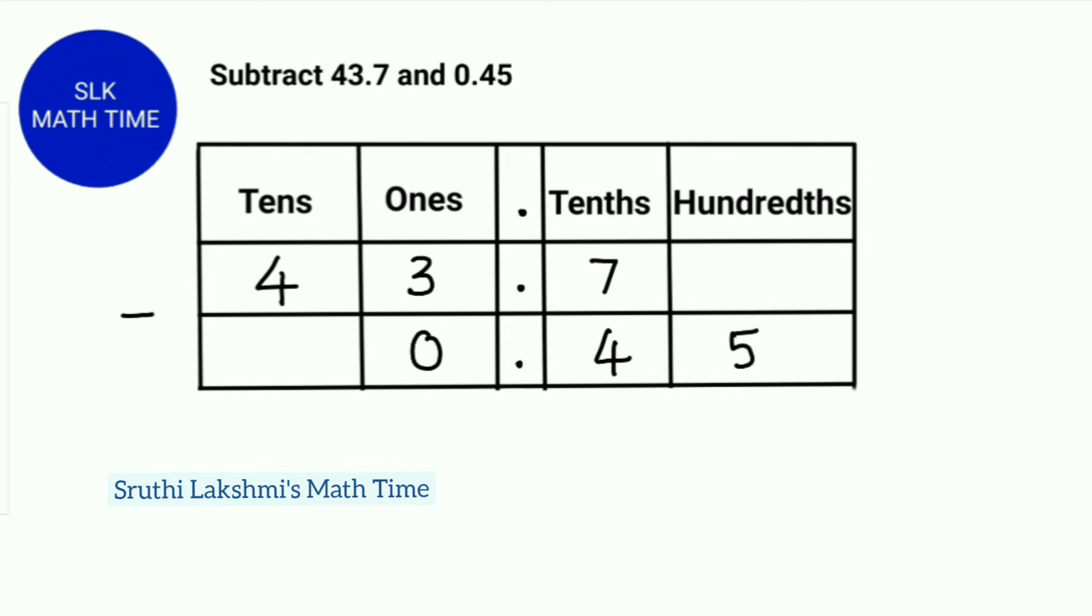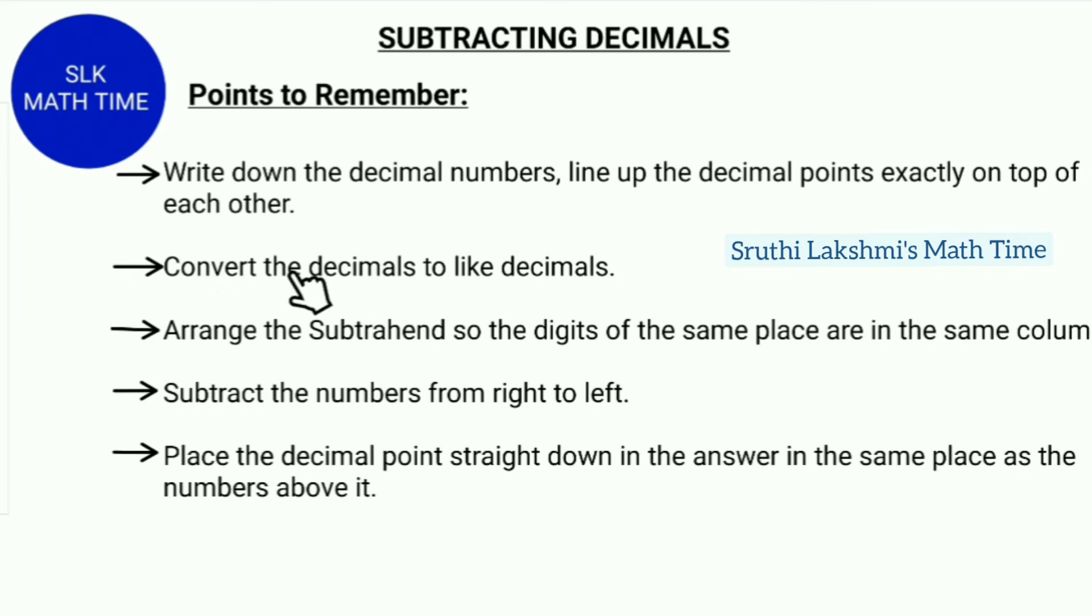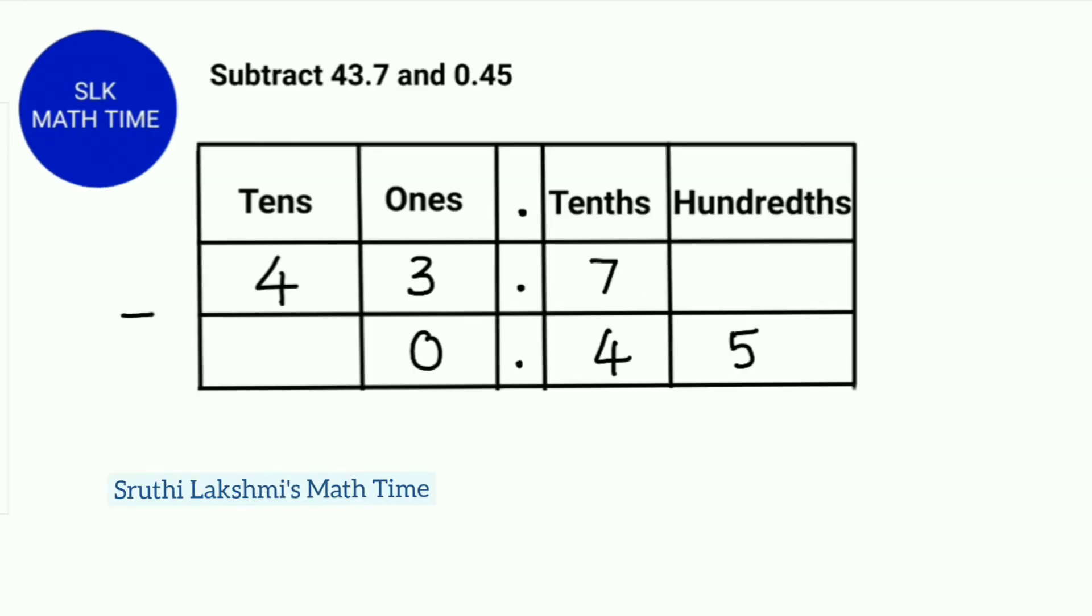As you see, we have to convert the decimals to like decimals. So that means that the digits after the decimal point should be the same. So we add a 0 here. Remember that 43.7 and 43.70 is the same because when we add a 0, it doesn't change the decimal number's value. So let's subtract as we would normally do.